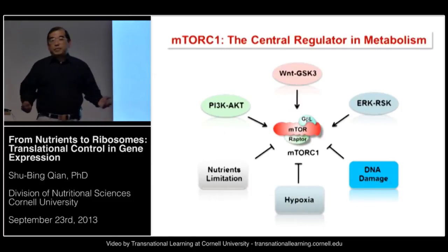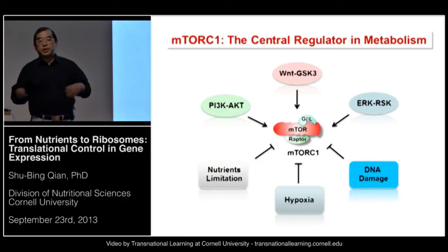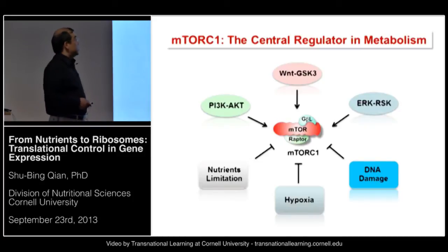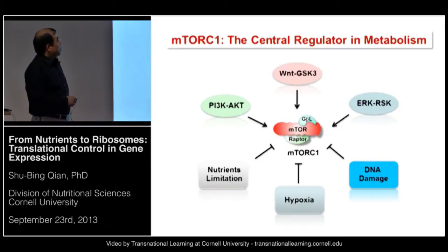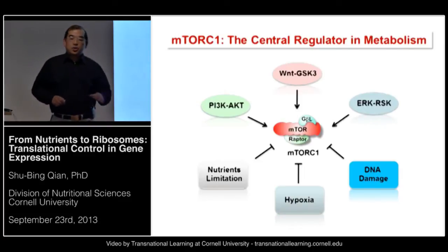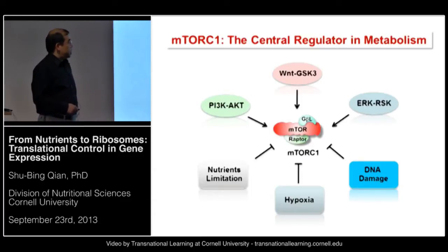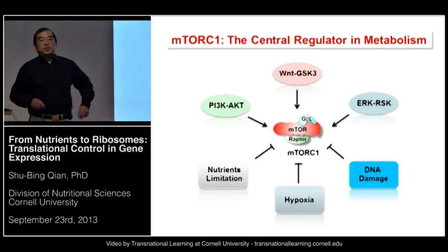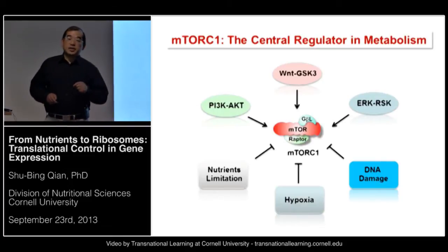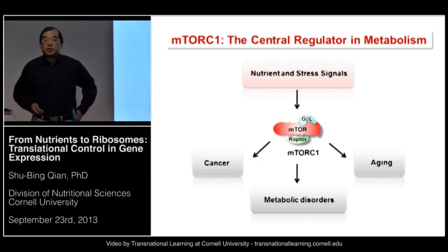Studies during the past several years have really put TOR signaling at the center of cell growth, proliferation, and metabolism. TOR receives multiple upstream signals, positively regulated by PI3K-AKT, WNT-GSK3, and ERK-RSK. TOR signaling can also be negatively regulated by a variety of stress signals, for example nutrient limitation, hypoxia, and DNA damage. The physiological importance of this pathway is nicely implicated by the fact that dysregulation has been implicated in a variety of human diseases such as cancer, metabolic disorders, and aging.